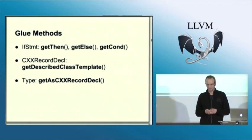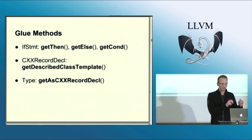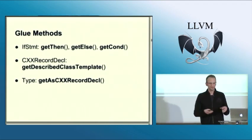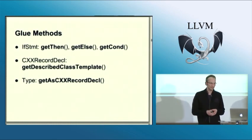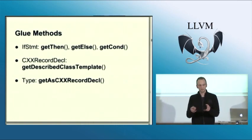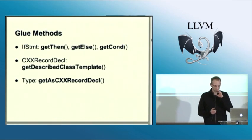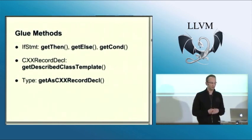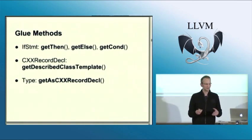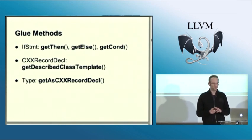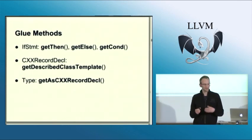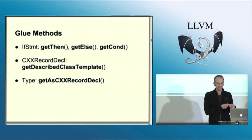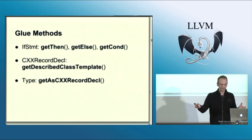Since there's no common interface to all those classes, how do you actually traverse the AST? What I call glue methods or traversal methods: every node of a certain type has methods that give the nodes it connects to. For example, an if statement clearly has a then statement and an else statement, and you traverse that by calling those methods on the if statement. But Clang's AST is not only a tree — it's actually a graph because you can jump from parts of the AST to other parts.